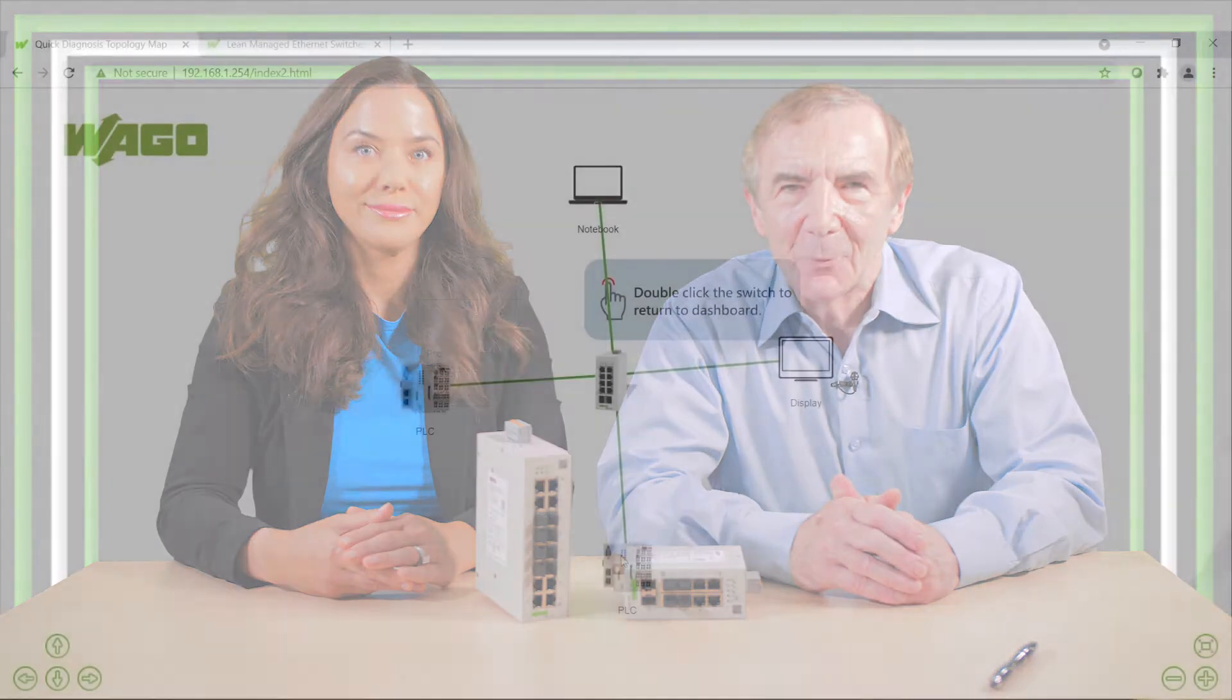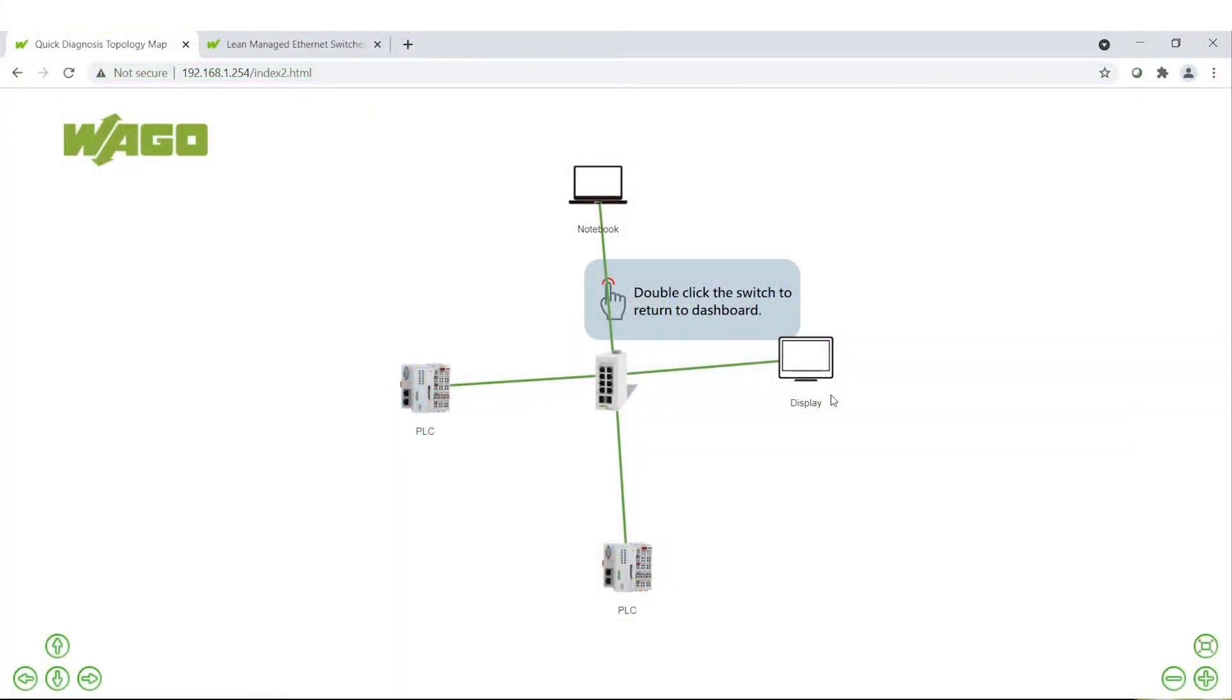WAGO dashboards for lean managed switches serve plant floor workers, now expected to be connected workers, and operate equipment with pretty advanced skill sets. The dashboards display network health in a way that's easy for these connected workers to access and understand.